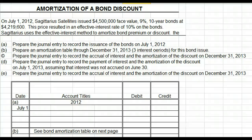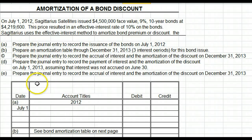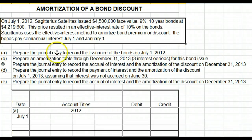Welcome to the discussion on amortization of a bond discount. In this example, these are the facts. On July 1, 2012, Sagittarius Satellites issued $4,500,000 face value, 9% 10-year bonds at $4,219,600. This price resulted in an effective interest rate of 10% on the bonds. Sagittarius uses the effective interest method to amortize the bond premium or discount. The bonds pay semi-annual interest July 1st and January 1st.